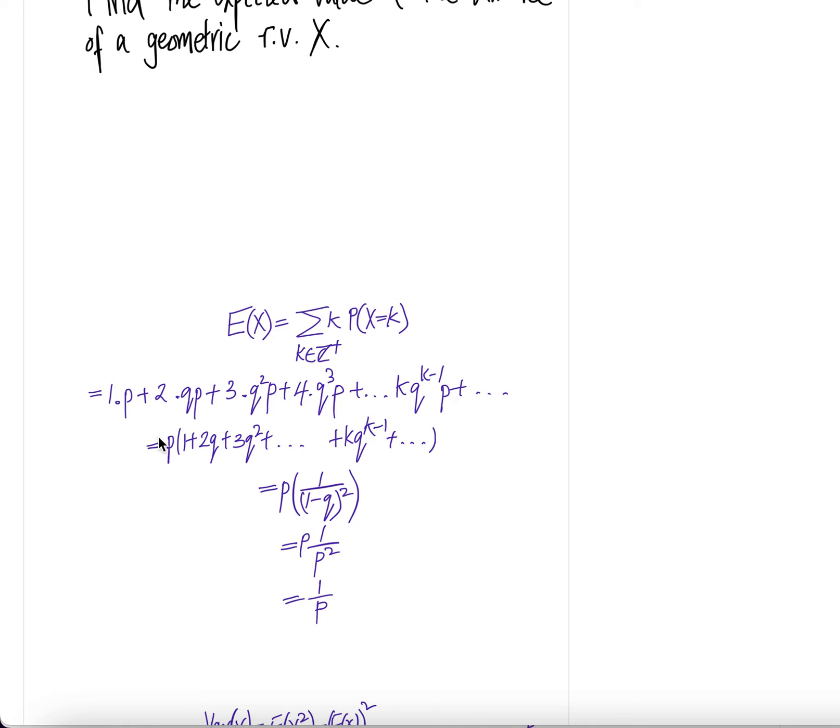Now, factor out the p, now you get 1 plus 2q plus 3q square plus dot dot dot plus k times q to the power k minus 1. This thing inside is 1 over 1 minus q to the power 2. 1 minus q is nothing more than p, so we're going to have 1 over p square, p and p cancel, we're going to have 1 over p.